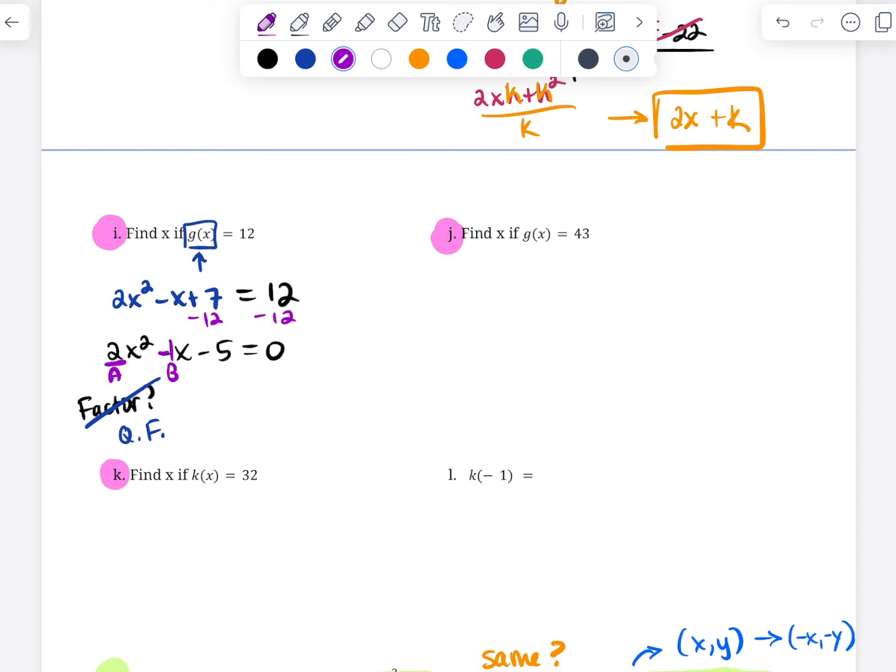So remember, 2 is a, the negative 1 in front of x is b, and the negative 5 is c. So x is the opposite of b, so it's positive 1, plus or minus the square root of b² - 4ac, all over 2a. So x is 1 plus or minus, and then the place where I often see people make the mistake most often is in this circled area, the discriminant.